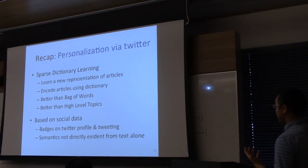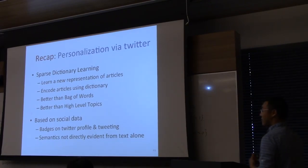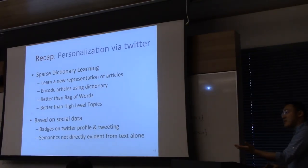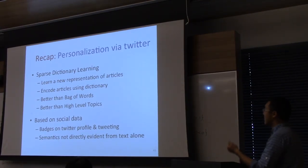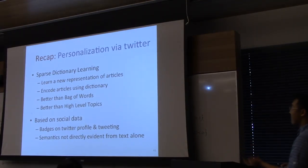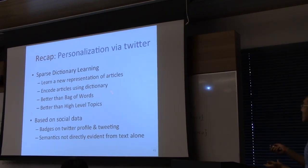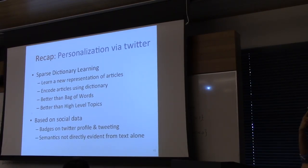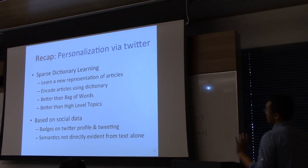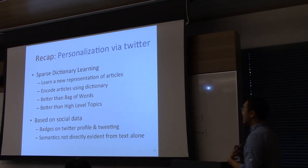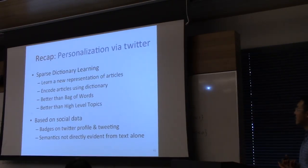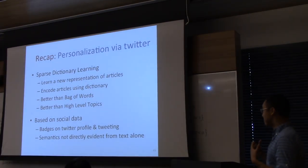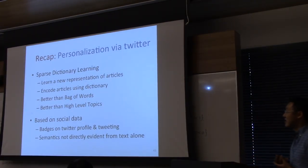To recap: the basic idea is to use sparse dictionary learning, which is mathematically similar to dimensionality reduction and latent factor models. You want to learn a low-dimensional representation of articles — think of B as U and article encodings as V from the homework. You constrain or initialize these using Twitter badge information rather than random initialization, and this leads to better representation than bag-of-words or high-level topics.